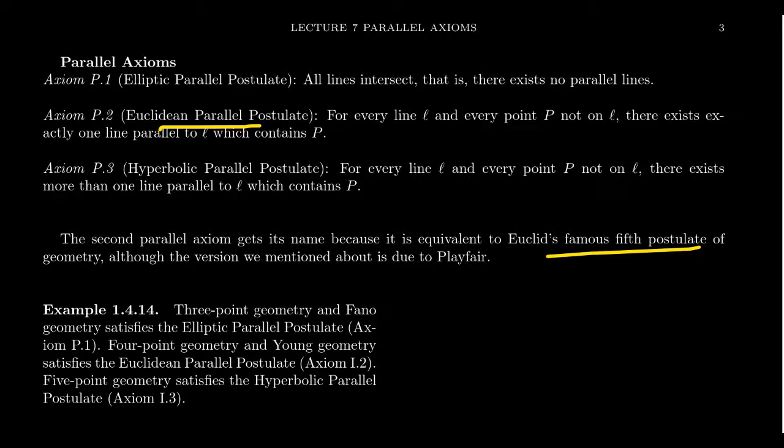Not incomplete in the sense we formally define it — it means he didn't have all the axioms on paper. He had five of them, but there were some other implicit axioms he was using in his proofs that weren't stated, and that's a big no-no for geometry.